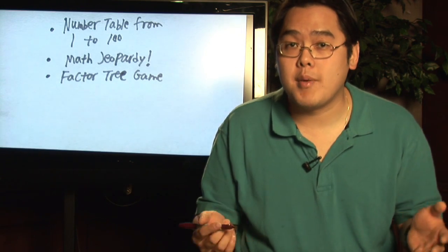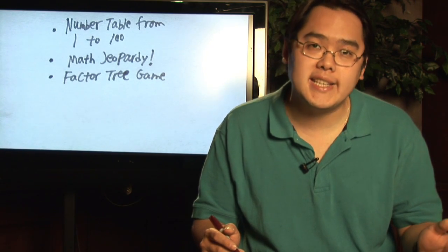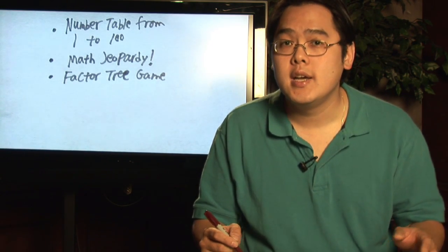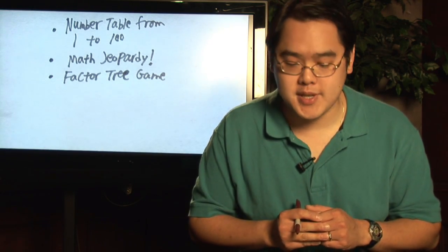Some prime numbers are of course 2, 3, 5, and 7. Some composite numbers would be 4, 8, 12, etc. Basically, the first hundred numbers provide a good foundation for understanding prime and composite numbers.